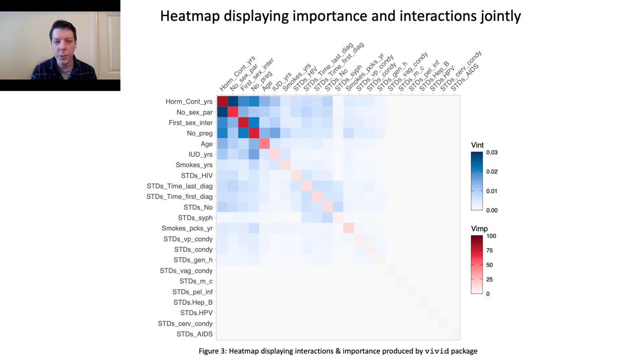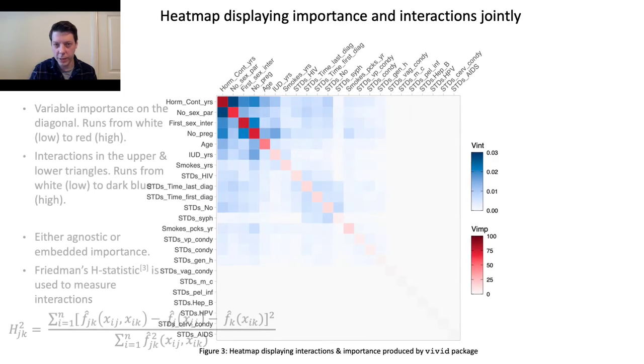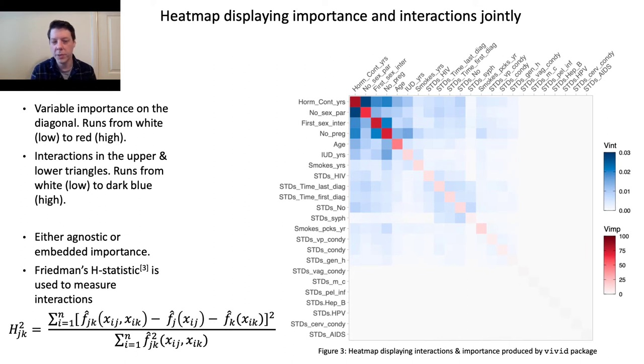Our first idea was a heat map displaying importance and interactions jointly. In this plot, the variable importance is on the diagonal and runs from white to red, and the interactions are in the upper and lower triangles and run from white to blue. This allows us to clearly see which variables are most influential in our model.